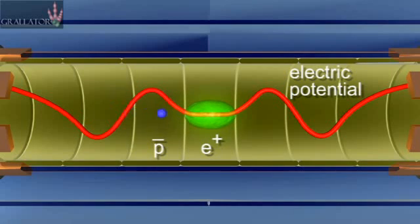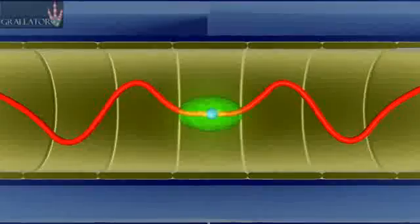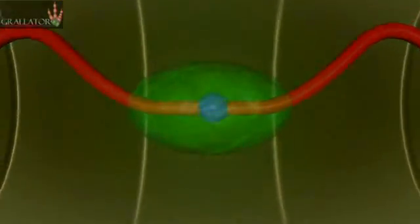These particles obviously have opposite charges, so they're in different curvature potentials. So now the antiprotons go into the positron cloud, hopefully very slowly so that you can make cold antihydrogen.